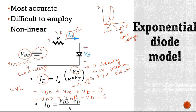Now, if you rearrange this equation, you will get ID is equal to (VDD - VD)/R. This is another equation of diode current that you are getting from KVL.